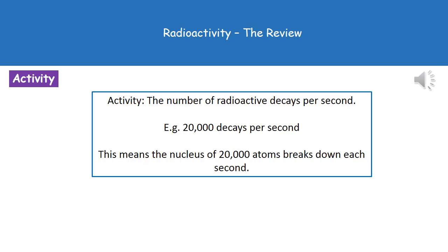We have a new word we need to know the definition of, which is activity. Whenever we're referring to the activity of a sample, we're referring to the number of radioactive decays per second. So for example, we might say there are 20,000 decays per second, or the activity is 20,000. So all that tells us is that 20,000 atoms' nuclei are breaking down each second.